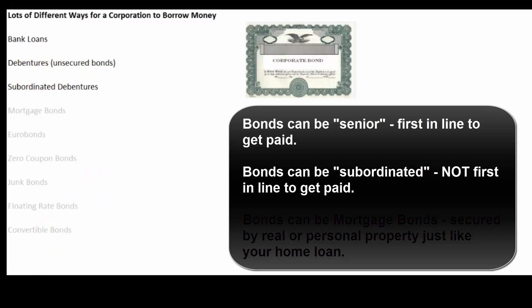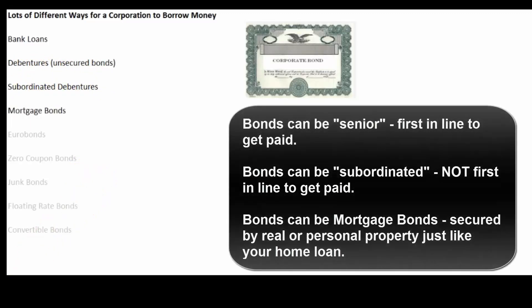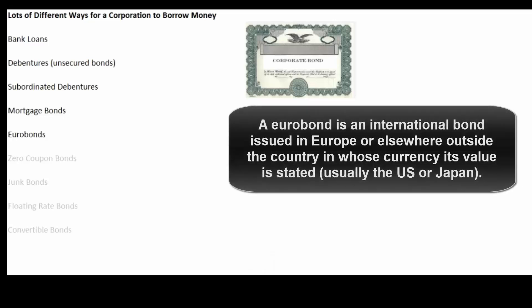Or they might issue mortgage bonds, which means the bonds are secured by real estate or equipment, so that if the bondholders don't get paid they can foreclose against that collateral. Or the bonds could be eurobonds — which is a bit of a misnomer — eurobonds simply means the bond is paid in a currency other than that of the country in which it was issued.